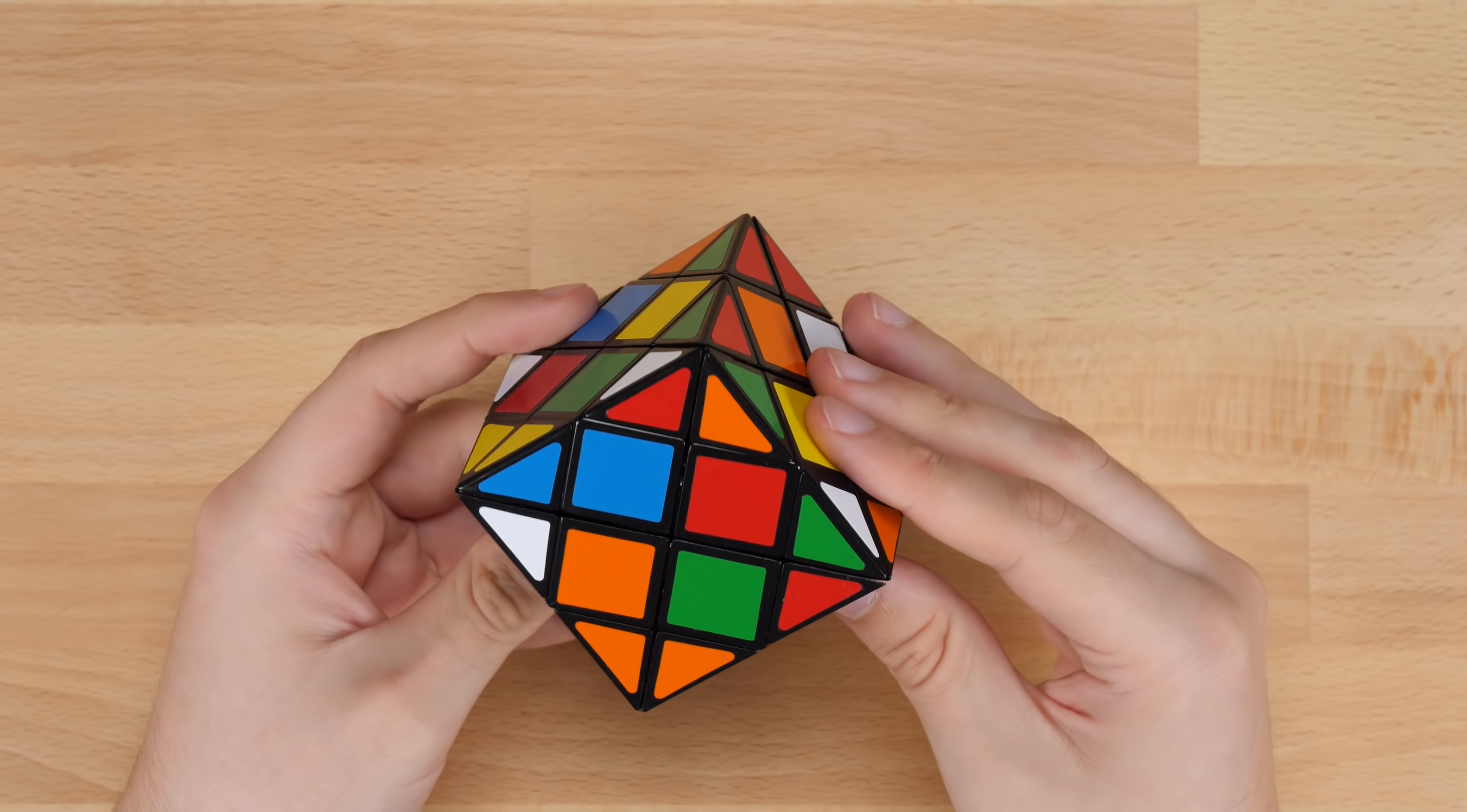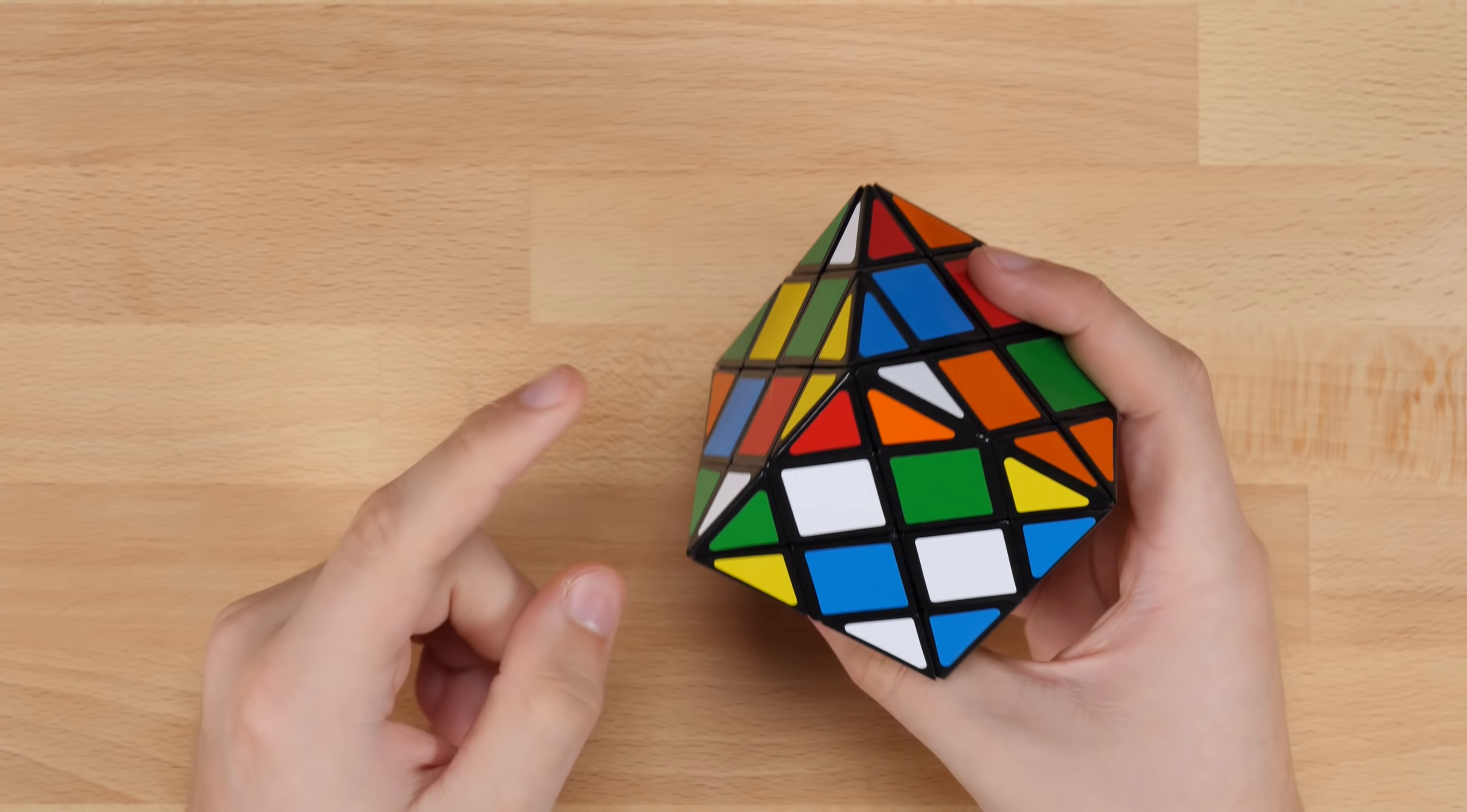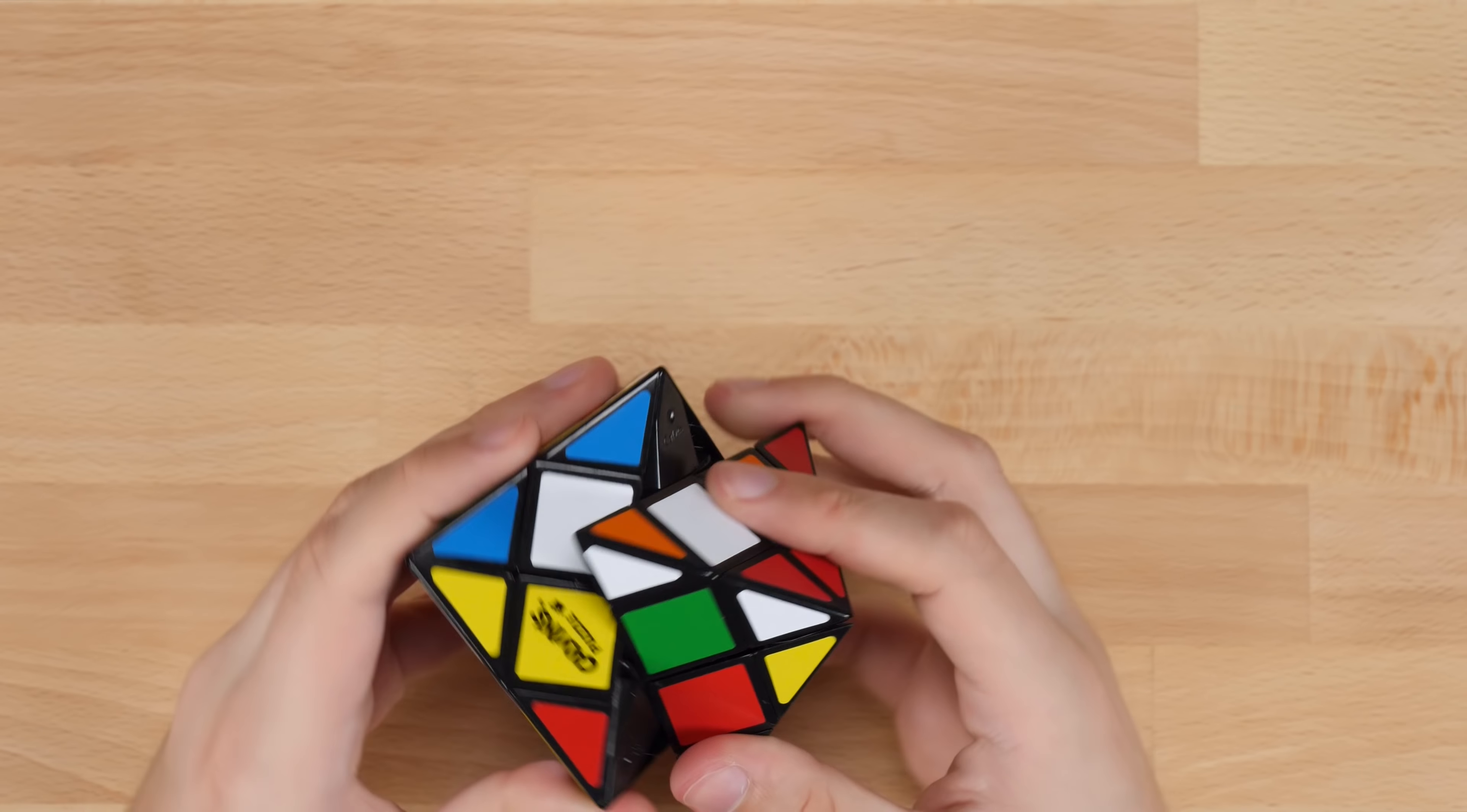Alright, so I think that is a pretty sufficient scramble. So the first thing I'm going to do is solve it like a dino cube. So that's basically going to be solving these 4 pieces here in the middle. So this part is really simple.